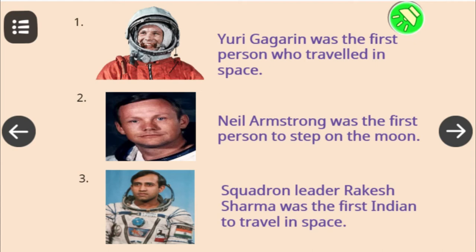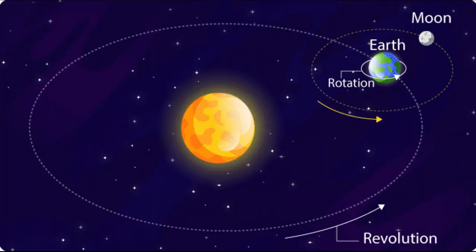Picture 3 shows squadron leader Rakesh Sharma. He was the first Indian to travel in space. We already know that the Earth revolves around the Sun and the Moon revolves around the Earth.